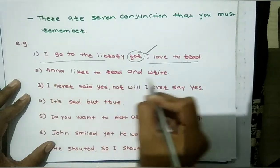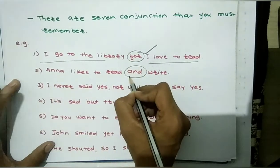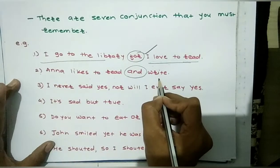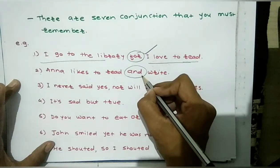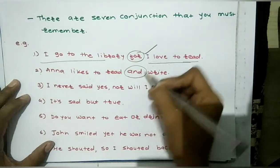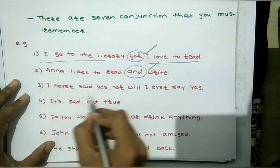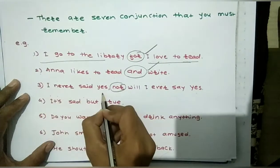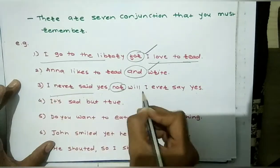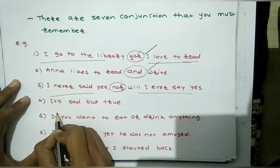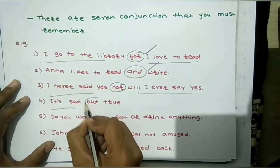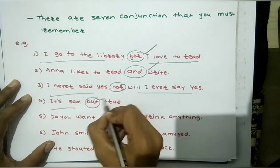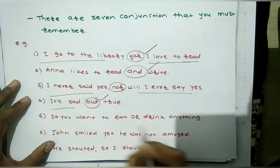Anna likes to read and write — two hobbies, one sentence. 'Anna likes to read and Anna likes to write' — these two sentences are connected using 'and.' Next: 'I never said yes, nor will I ever say yes.' Here 'nor' is used. Then: 'It's sad but true' — 'but' joins two contrasting ideas.